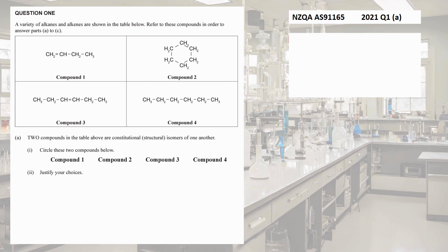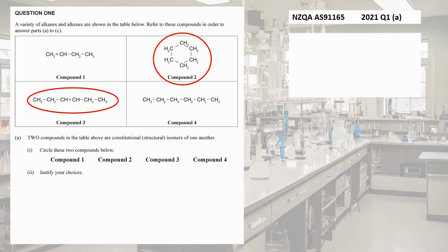Compound three has a double bond, so it has six carbons and 12 hydrogens, whereas compound four has six carbons and 14 hydrogens — so they do not have the same number and type of atoms and are not constitutional isomers. Compound two is in a circle — we call this a cyclic compound. It has six carbons and 12 hydrogens, the same as compound three.